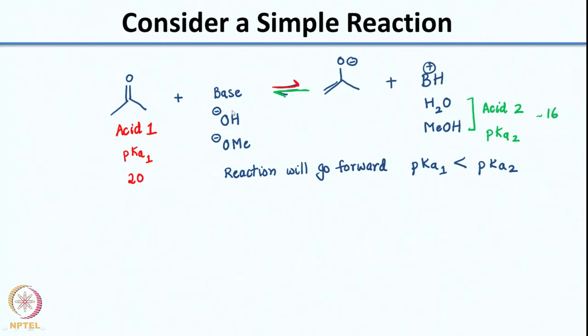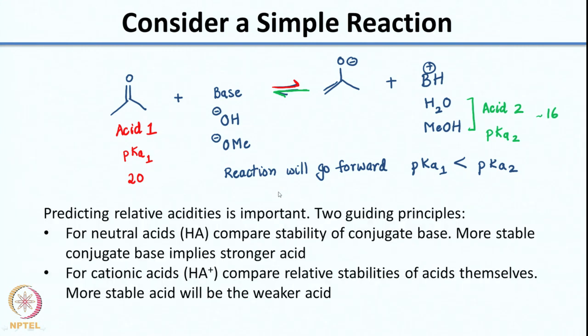We compared the pKa of acetone with methanol and water — both are 16 — while acetone has a pKa of 20. So these are not great bases for deprotonating acetone. Two ground rules: for neutral acids, compare stability of the conjugate base — the more stable conjugate base implies a stronger acid. For cationic acids like HA+, the more stable cation is a weaker acid because it would not want to give away its proton.